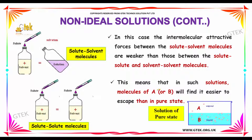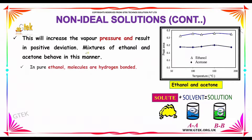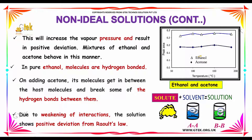This means that in such a solution, molecules of A or B will find it easier to escape than in the pure state. This will increase the vapor pressure and result in positive deviations. The mixture of ethanol and acetone behaves in this manner. On adding acetone, its molecules get in between the host molecules and break some of the hydrogen bonds between them. In pure ethanol, the molecules are hydrogen bonded. Due to a weakening of interactions, the solution shows positive deviation from Raoult's law.